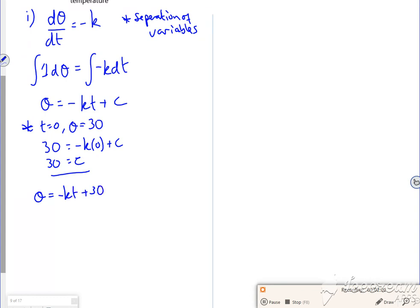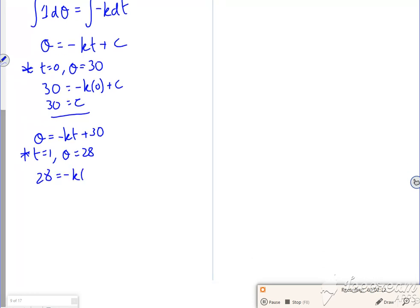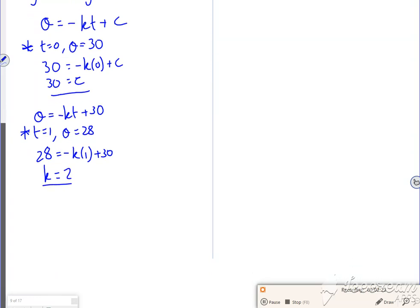So now I know that θ is minus kt plus 30. I know that one hour later, so when t is 1, θ is 28. So if I put that into my equation, I get that k is 2.